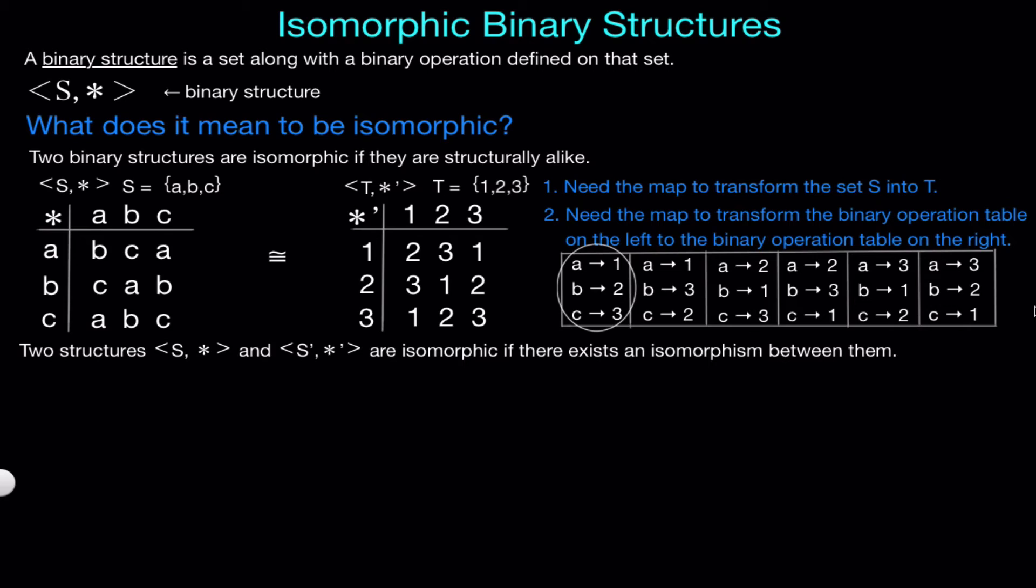So if we have two structures, S and S prime, we can say they are isomorphic if there exists an isomorphism between them. And an isomorphism is a one-to-one function, we'll call it phi, mapping S onto S prime, such that for all X and Y in S, we have the following property satisfied, where we have phi of X star Y equals phi of X star prime phi of Y, and this last part is called the homomorphism property. So an isomorphism is really just a function that renames the elements of S to the elements of T while preserving the structure of the binary operation.